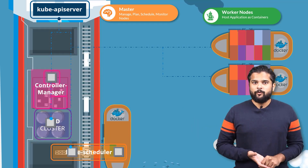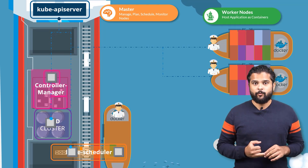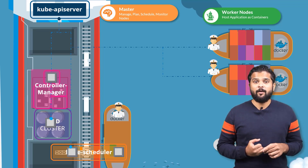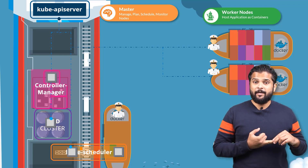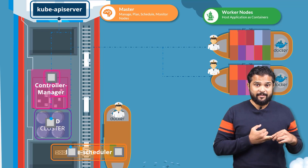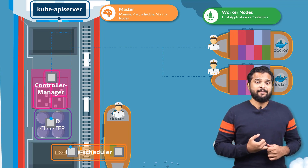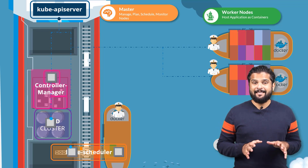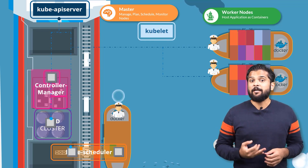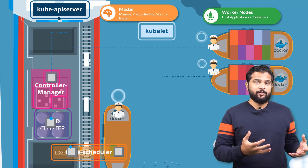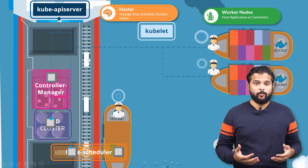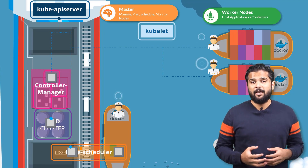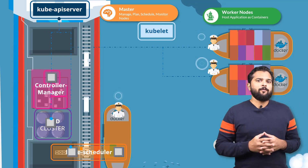Let us now turn our focus onto the cargo ships. Every ship has a captain who is responsible for managing all activities on the ship. The captain is responsible for liaising with the master ships — starting with letting the master ship know they are interested in joining the group, receiving information about the containers to be loaded, loading the appropriate containers as required, and sending reports back to the master about the status of the ship and the containers on it. The captain of the ship is the kubelet in Kubernetes. A kubelet is an agent that runs on each node in a cluster. It listens for instructions from the Kube API server and deploys or destroys containers on the nodes as required. The Kube API server periodically fetches status reports from the kubelet to monitor the status of nodes and containers on them.